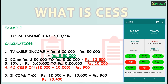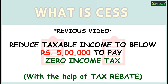In one of our previous videos, we have seen how you can make use of the maximum tax rebate of rupees 12,500 by getting your taxable income to below rupees 5 lakhs. So instead of paying income tax and CES of rupees 23,400, you can make appropriate investments to get your taxable income below rupees 5 lakhs and avoid paying any income tax.